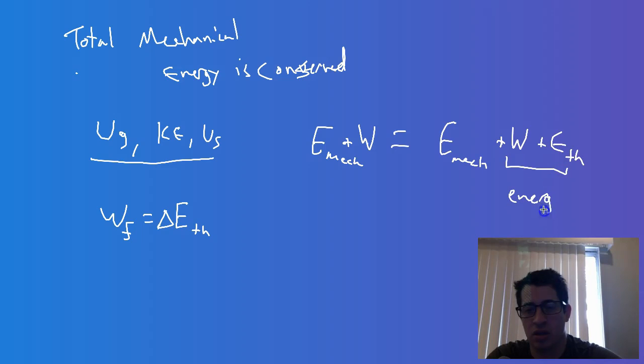So energy lost on the right side, energy gained on the left side. And this is basically the modification we'll make to our problem solving to allow us to account for these things.